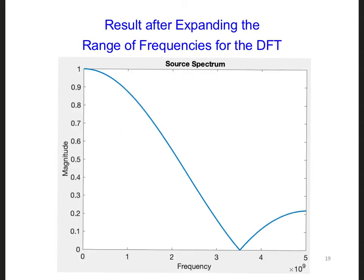Here is the result for the same DFT code but with the spectrum plotted from 1 megahertz to 5 gigahertz. I know it looks like it's plotted all the way down to 0 hertz but it just looks that way on the scale, and indeed we can see that there is a null at 3.5 gigahertz as expected.